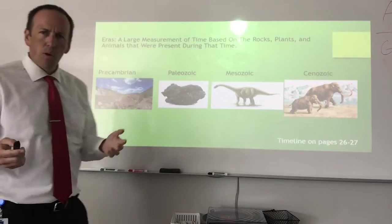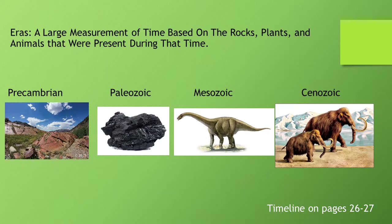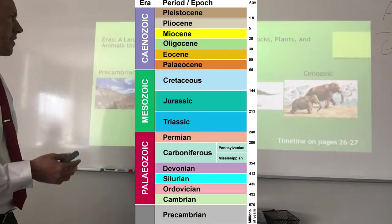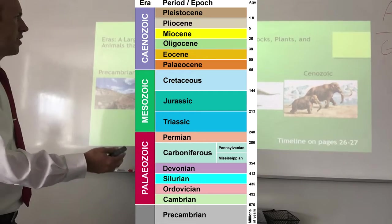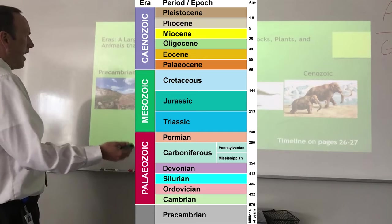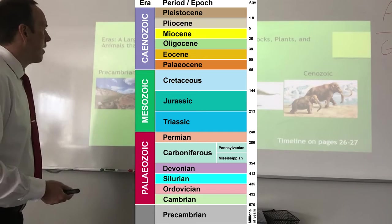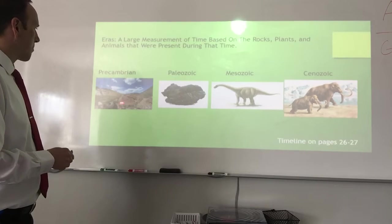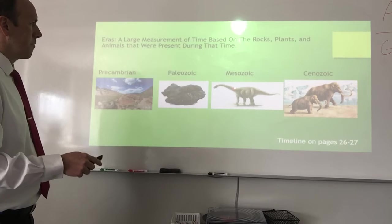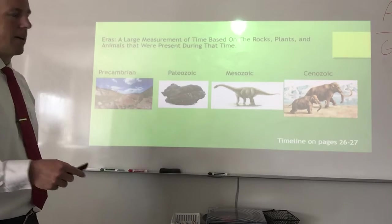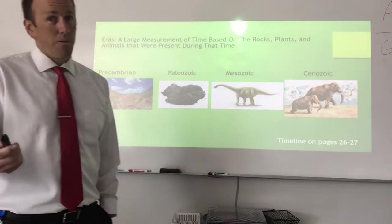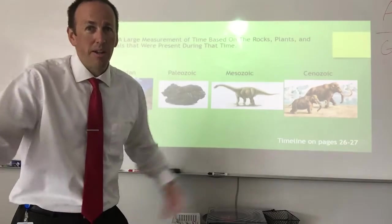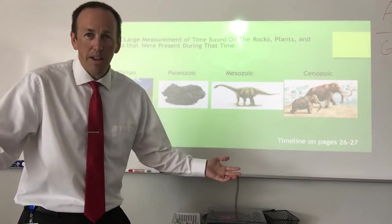Eras — have you ever heard of this? Eras are a way of measuring time: a large measurement of time based upon similar rocks, plants, and animals that were around during that time. You've got the Precambrian, the Paleozoic, the Mesozoic, the Cenozoic. Those are your eras.